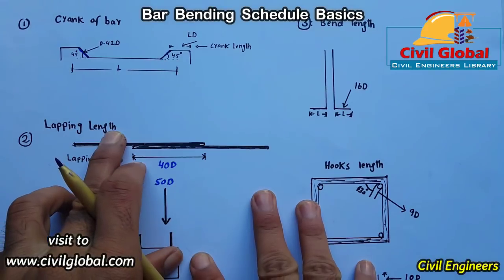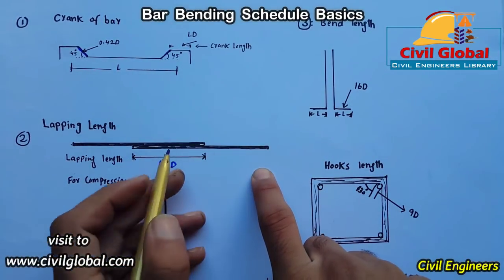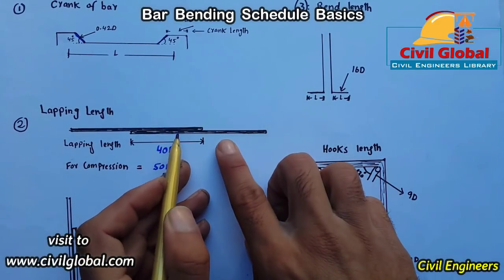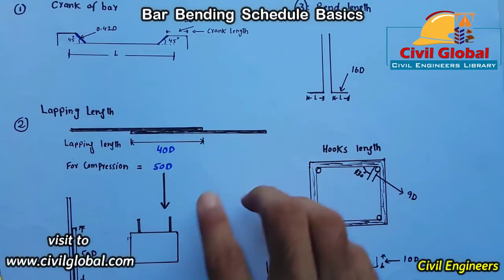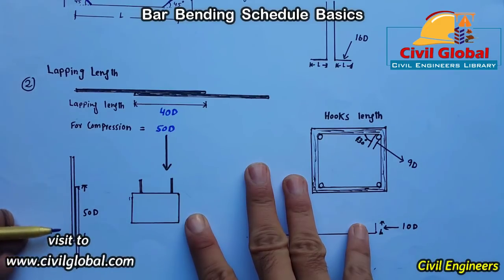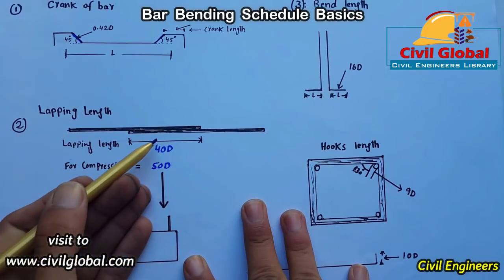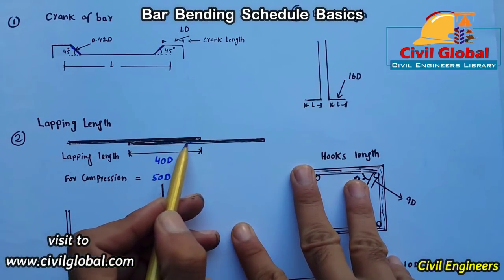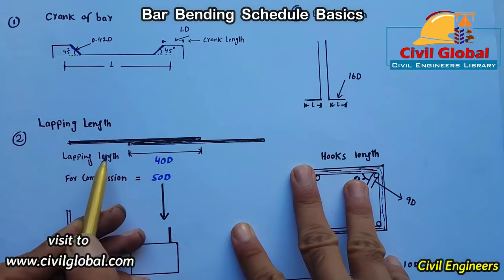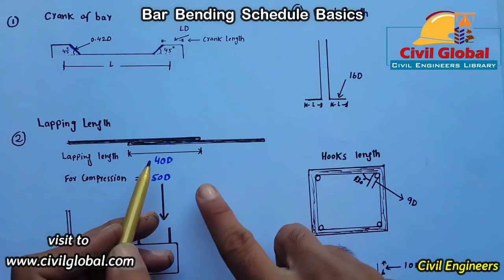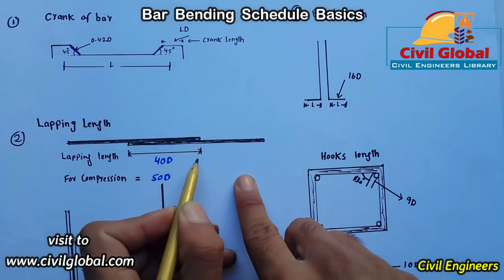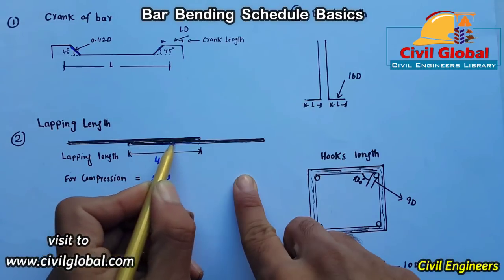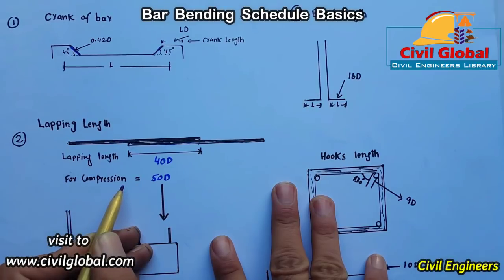The second basic is lapping length, also called overlapping length. We have tension members — used in slabs and beams — and compression members used in columns. The lapping length is the distance from one steel bar to the overlapping point of the next bar. For a tension member such as a beam or slab, the lapping length formula is 40D, where 40 is a constant and D is the diameter of the steel.